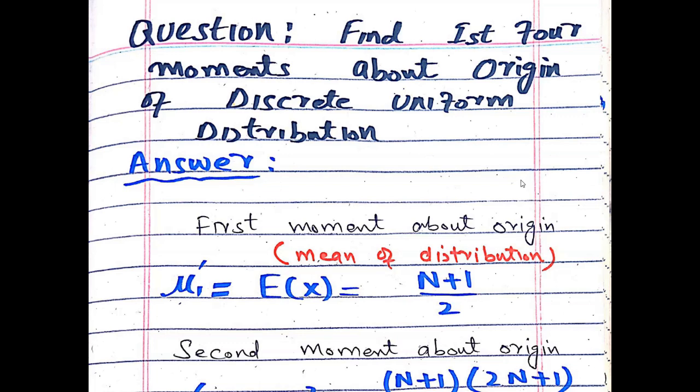In this video, I explain the first four moments about the origin of the discrete uniform distribution. Now let's start.